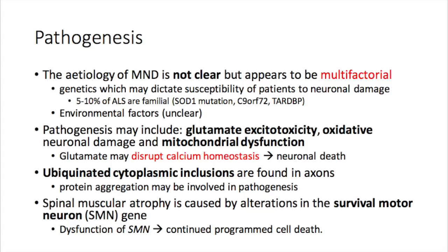What you also tend to see are ubiquitinated cytoplasmic inclusions in the axons of affected nerves. These protein aggregations may be somehow involved with pathogenesis, although the role is not clear. An interesting finding in spinal muscular atrophy is dysfunction of the survival motor neuron gene, which results in continued programmed cell death of neurons.